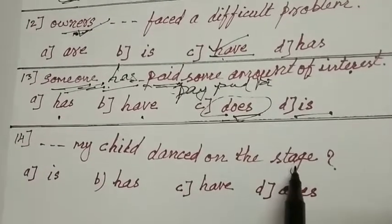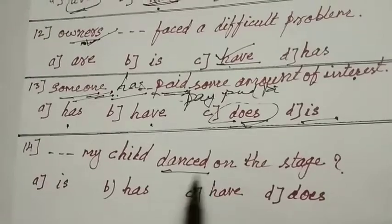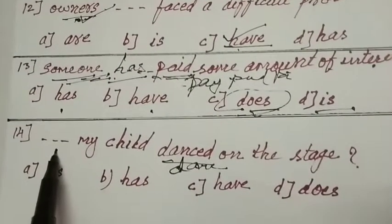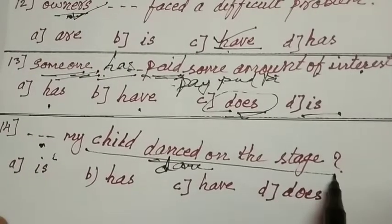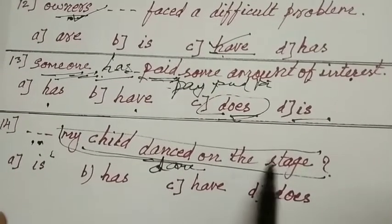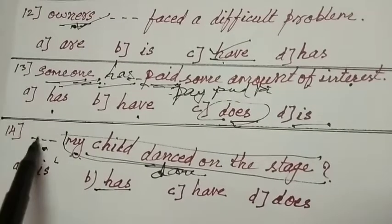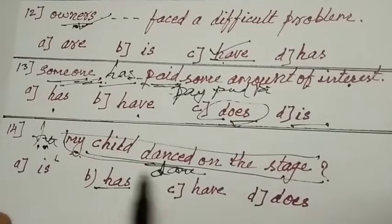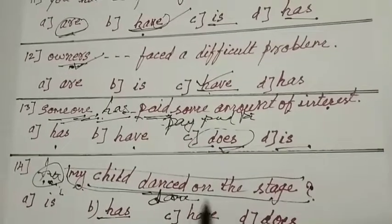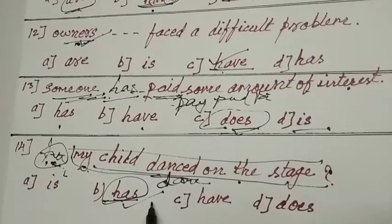Dash my child danced round the stage. My child danced round the stage. This is danced, third form. Here has does not come. Has should come here to make the sentence correct. But we are trying to trick you here. Your answer should be has. Has my child danced round the stage? Has comes. Has is the answer.